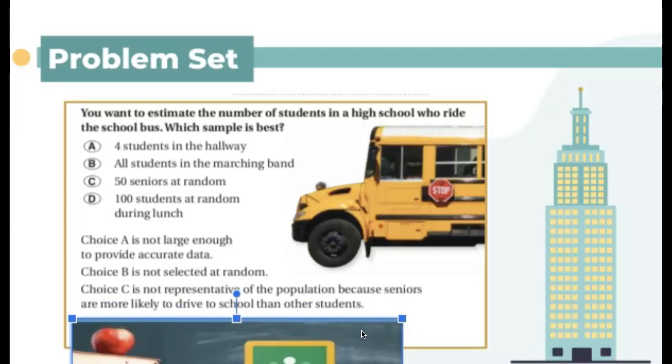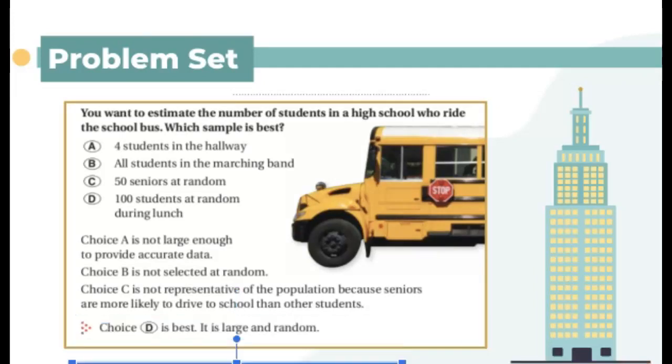And the last one, it says choose D is the best because it's large and random. So students at random during lunch, at random, this is randomly selected. That becomes the best choice or the best sample that you could have to represent the population wherever you are testing.